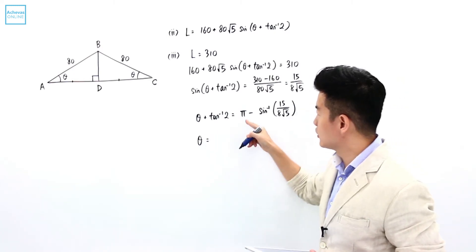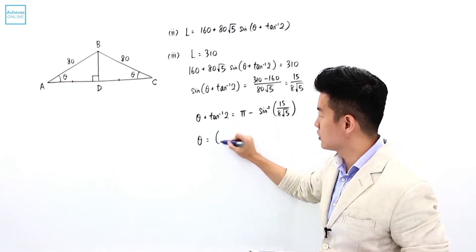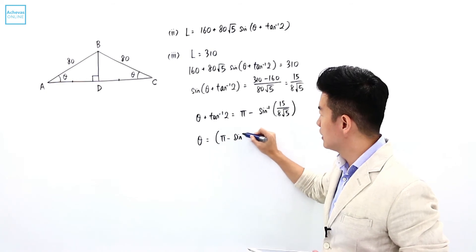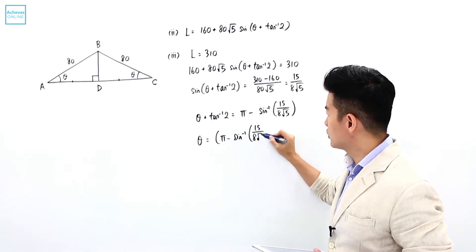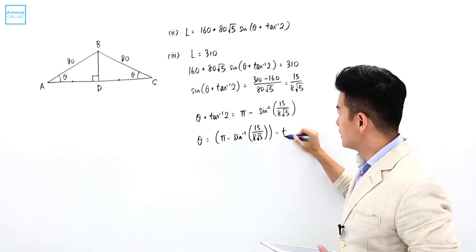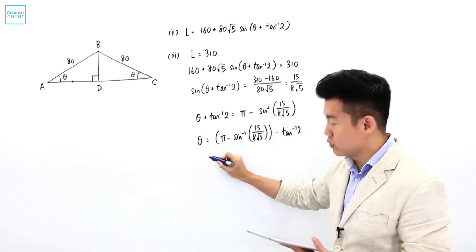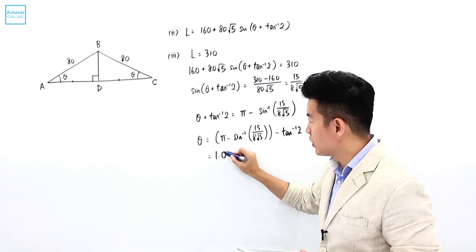Which means that theta is going to be this minus away this. So pi minus sine inverse of 15 over 8 square root of 5 minus away tangent inverse 2. And theta will be 1.04.